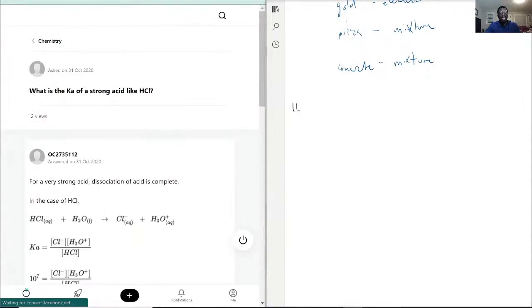So we have what is the Ka of a strong acid like HCl? Tricky. The Ka of a strong acid like HCl - they actually give us a hint in the name, right? Strong acid. Because we actually don't need to check our acids and bases sheet, but we actually don't need to.